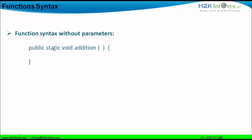A function can be static or non-static. If it is a static function, we define it with the keyword 'static'. If it is non-static, there is no keyword for it. Similarly, a function can have access specifiers: public, protected, private, or default. The public function uses the 'public' keyword, protected uses 'protected', and private uses 'private'. A default function does not have a keyword — if no access specifier is defined, it is default by default.